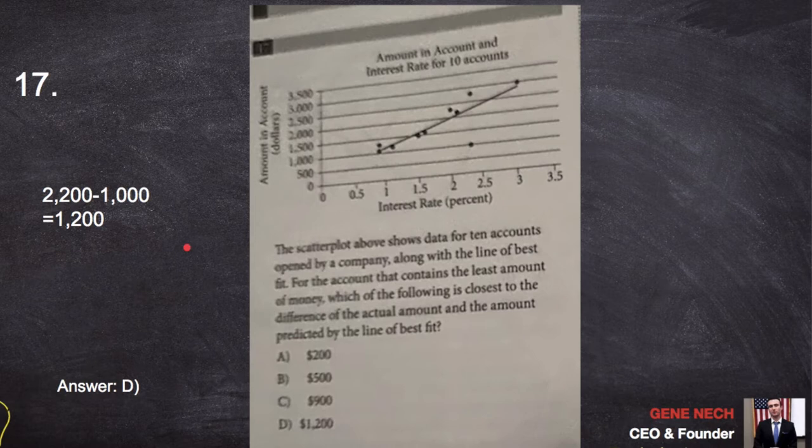Number 17. This is a classic SAT problem. So you're probably tired going into this and the devil's in the details. Like literally how they phrase the question is how they get us because the math is so simple. I'm subtracting two numbers, but what two numbers? Alright. So the scatterplot above shows data from 10 accounts. I got to figure out what the 10 accounts are. They're actually the dots, opened by a company along with the line of best fit. Here's the line of best fit, obviously.